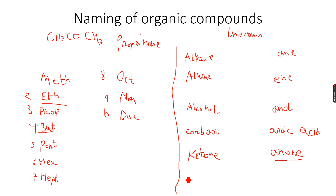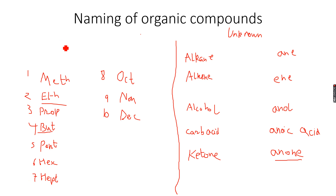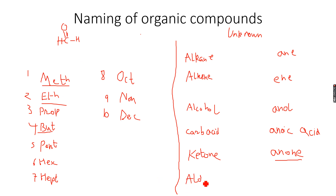Now we are done with ketones. If it's an aldehyde, let's take the simplest aldehyde possible. This is called methanal. You can see that there is one carbon atom, so we will have 'meth' at the start of the name. When it's an aldehyde, the name ends with 'anol' — so methanal: 'meth' because one carbon atom.